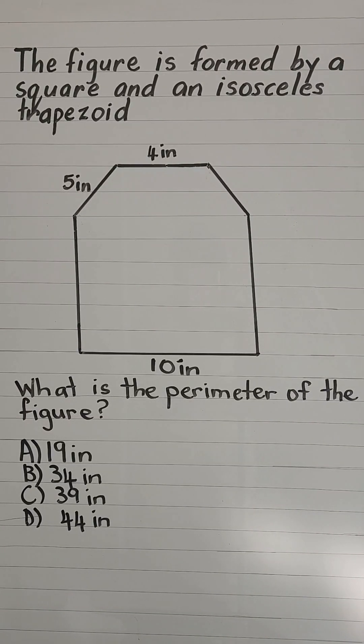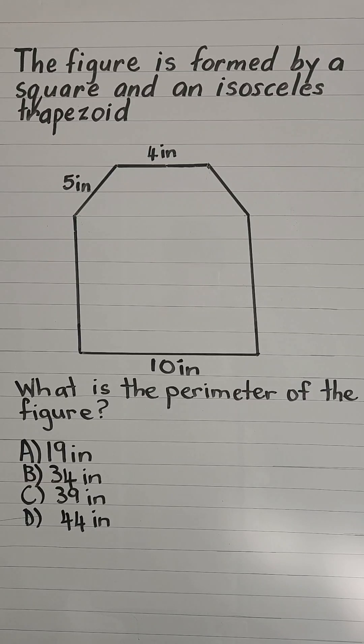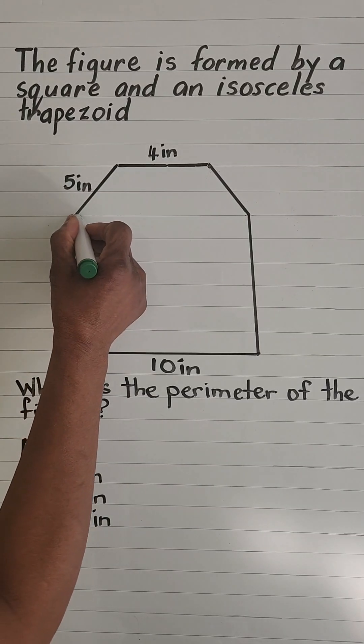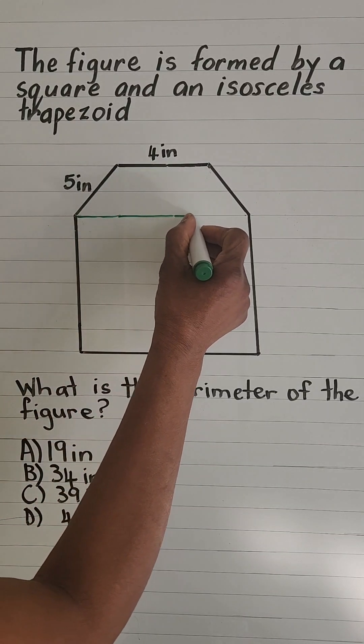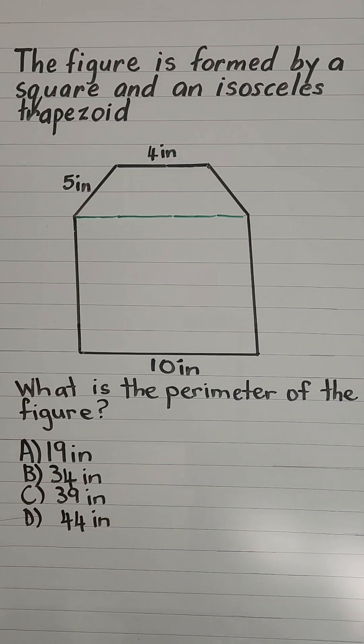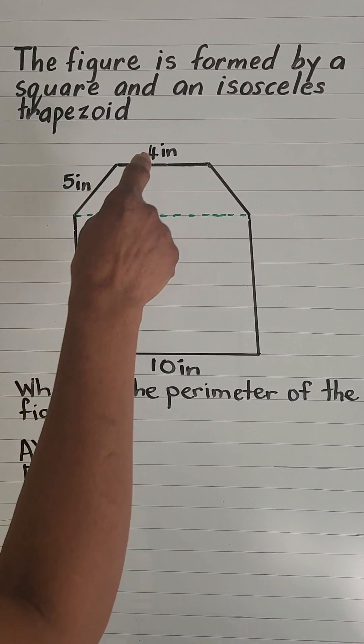The figure is formed by a square and an isosceles trapezoid. What is the perimeter of the figure? If we put in this line, we'll be able to distinguish the trapezoid and the square, the isosceles trapezoid at the top.